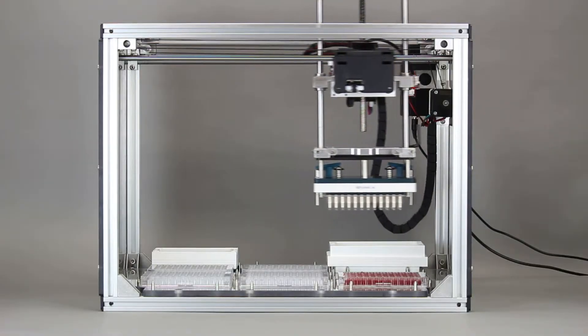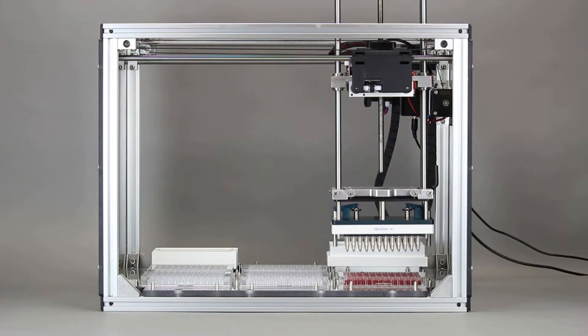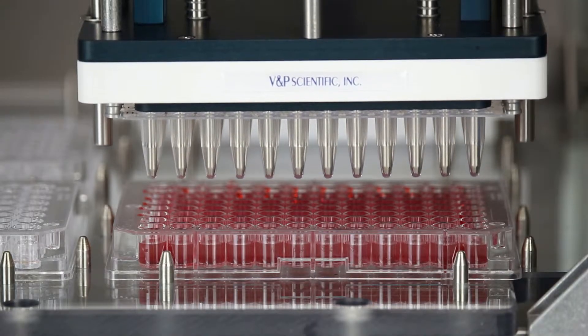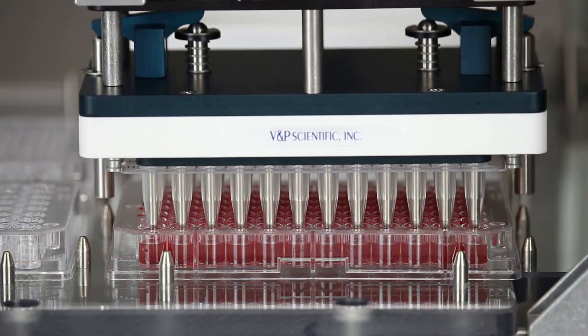Once loaded, you can now start the assay. The Magpin R is slowly inserted into the wells containing the magnetic beads.